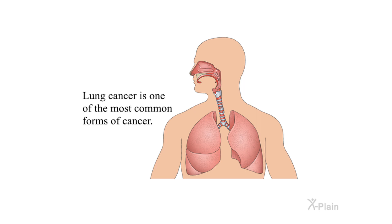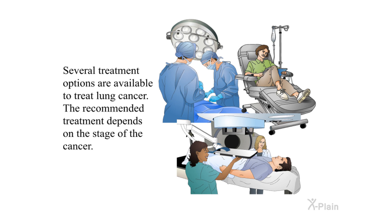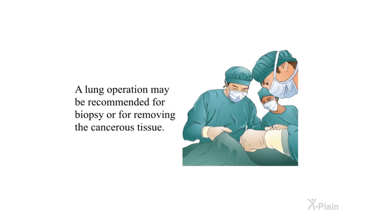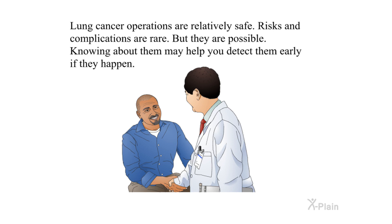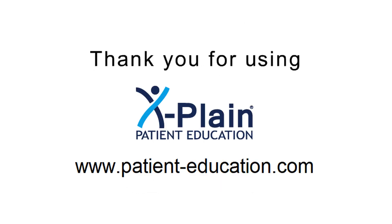Summary: Lung cancer is one of the most common forms of cancer. Several treatment options are available, and the recommended treatment depends on the stage of the cancer. A lung operation may be recommended for biopsy or for removing cancerous tissue. Lung cancer operations are relatively safe — risks and complications are rare but possible, and knowing about them may help you detect them early if they happen. Thank you for using X-Plain.